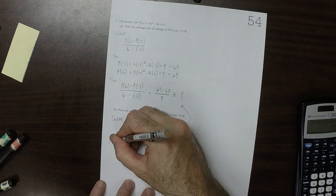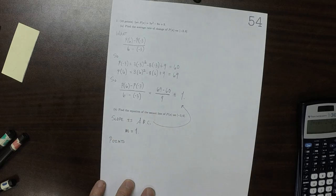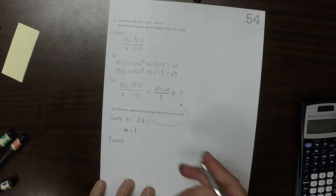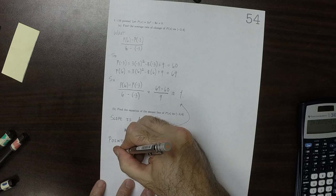And then the points that are on the secant line, we also know those because we know that the points are on the secant line.